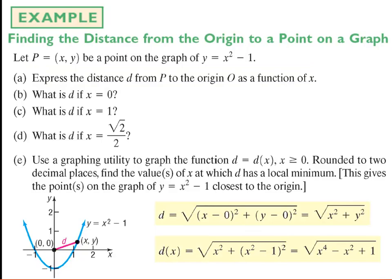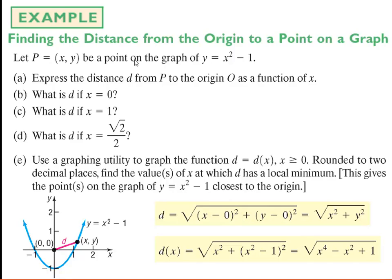One advantage to this formula is I can now find specific distances easily. When x equals 0, I'm finding the distance from the vertex of the parabola to the origin — plugging 0 in gives me square root of 1, which is 1. That's a purely vertical distance from y equals 0 to y equals negative 1, so a distance of 1. When x equals 1, plugging in gives 1 minus 1 plus 1 equals square root of 1, also 1.